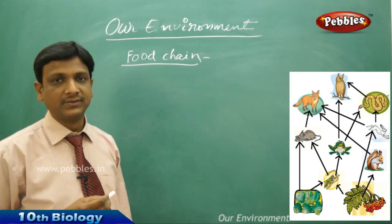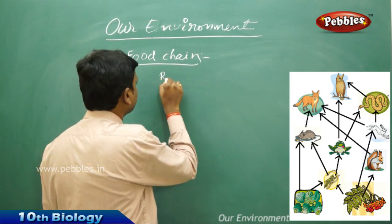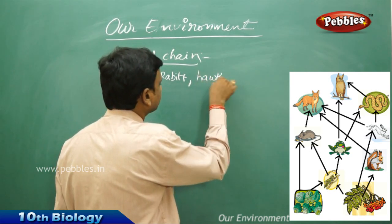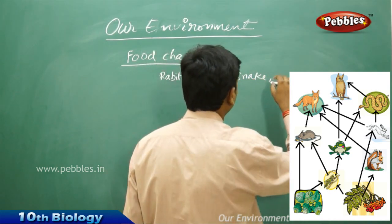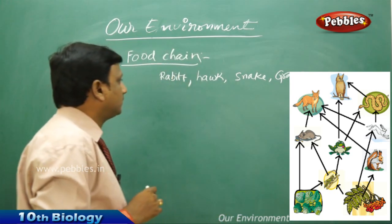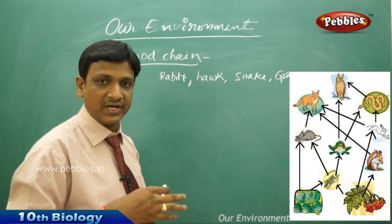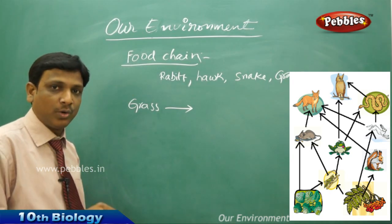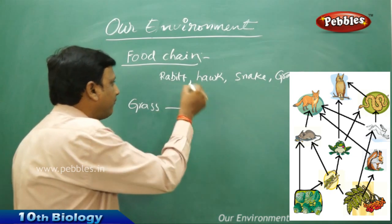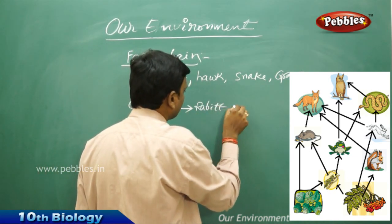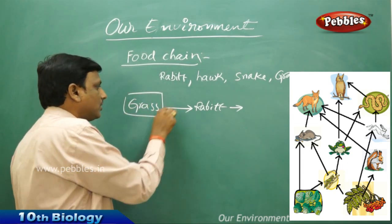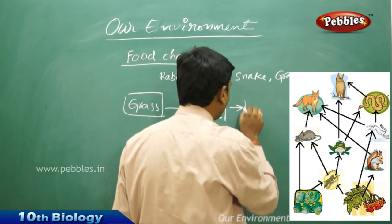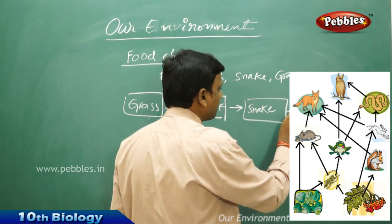Let us see how to draw a food chain. We have taken organisms like grass, rabbit, snake, and hawk. We put them in order showing the food relation. First I am writing grass, and I put an arrow — the arrow should always point from the food to the feeder. Grass is eaten by rabbit, then rabbit to snake, and snake to hawk. This is how we represent a food chain.